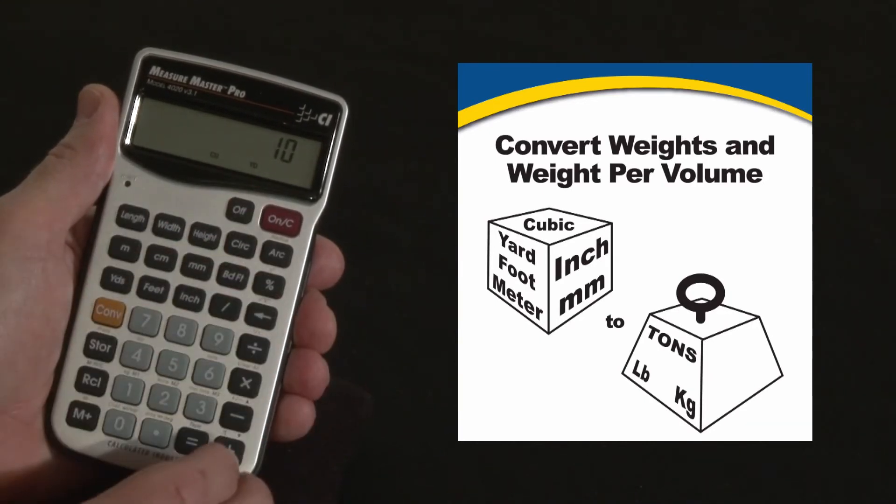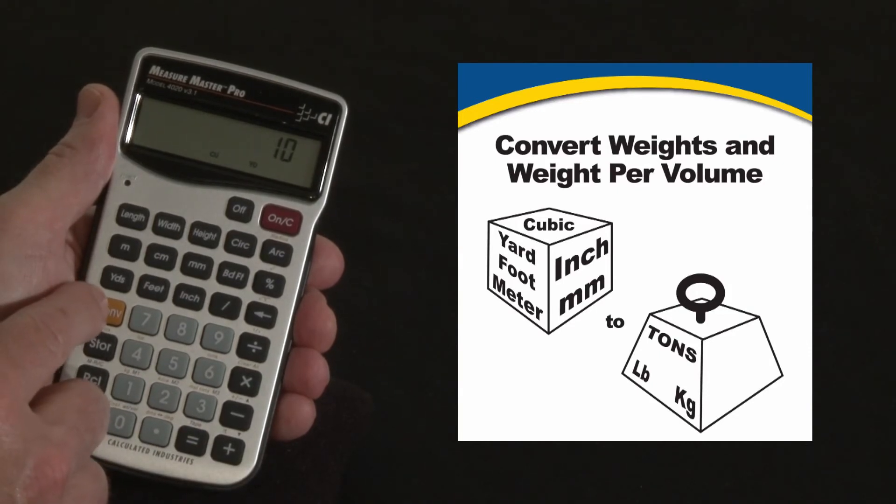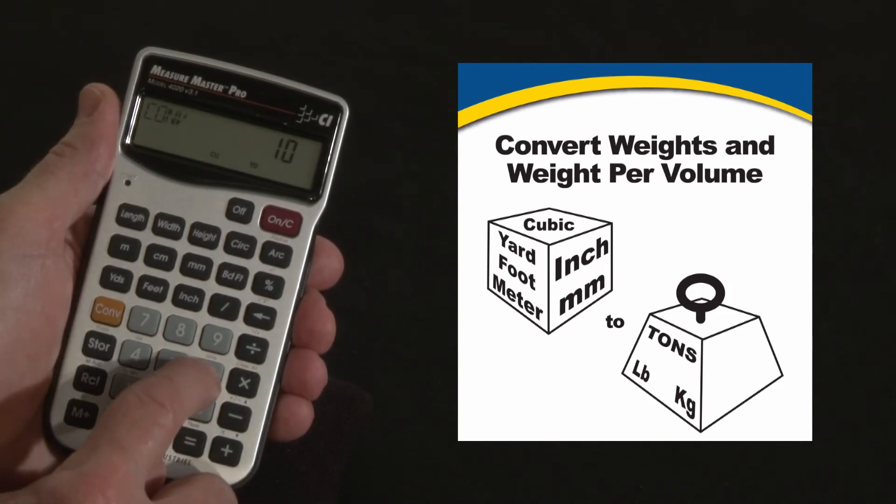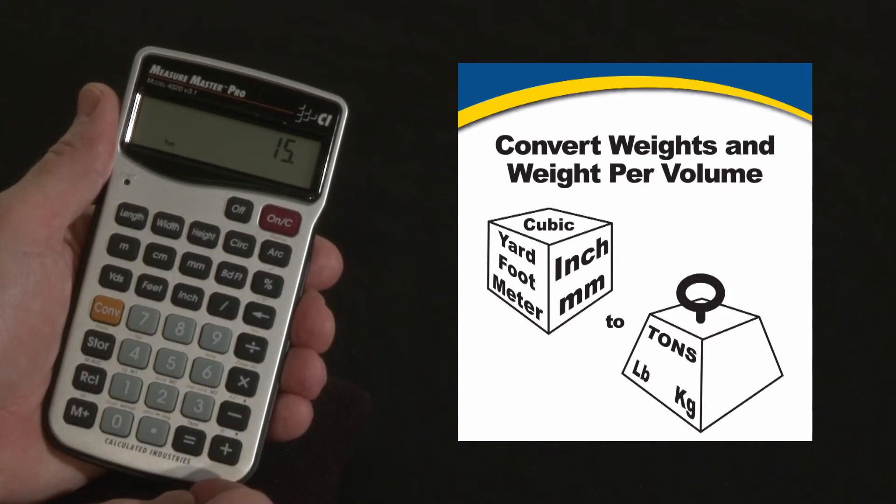Press yard to enter cubic yards. Now let's convert that to tons. Over the 6 key it says tons, so press that. That's going to be, of course, 15 tons.